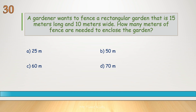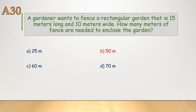A gardener wants to fence a rectangular garden that is 15 meters long and 10 meters wide. How many meters of fence are needed to enclose the garden? Correct answer is B, 50 meters.